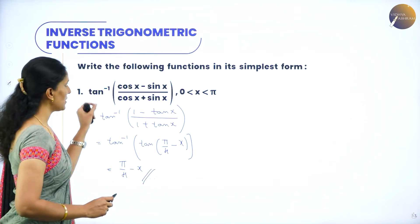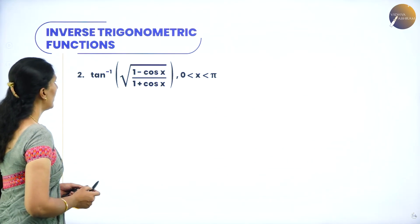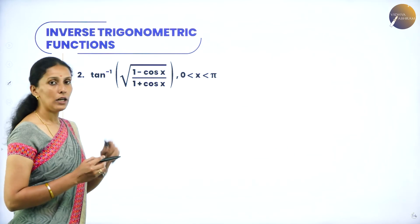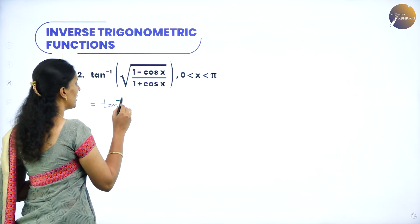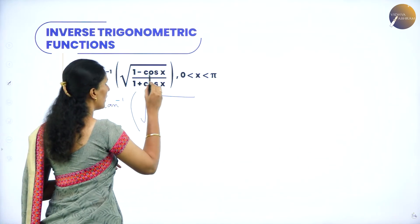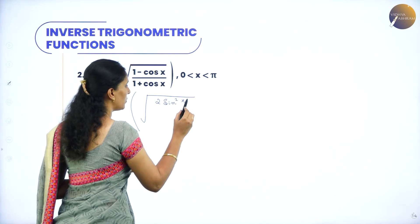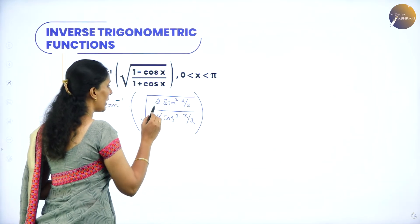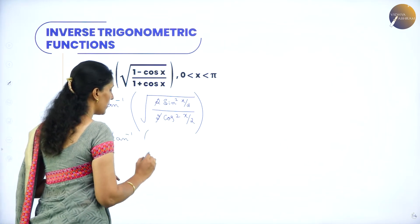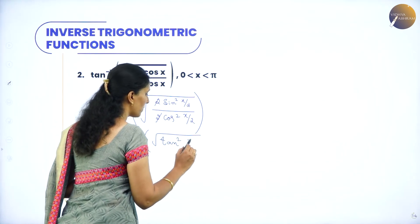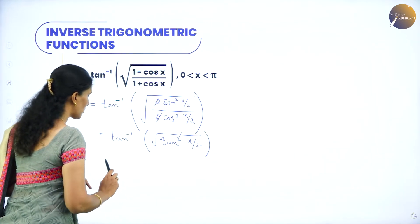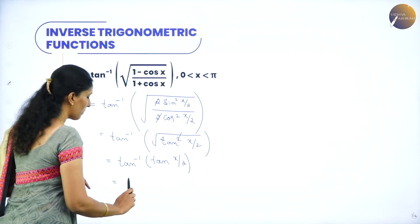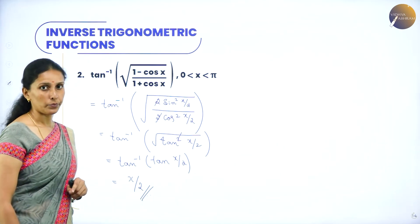Next simplest form: tan inverse of √((1 - cos x)/(1 + cos x)). Using the multiple angle property, 1 minus cos x equals 2 sin²(x/2) and 1 plus cos x equals 2 cos²(x/2). The 2's cancel and sin²/cos² under the square root becomes tan²(x/2). The square root and square cancel, giving tan inverse of tan(x/2), which equals x/2.